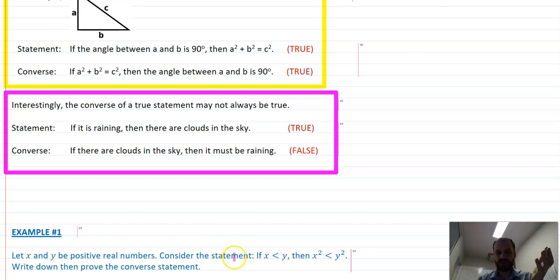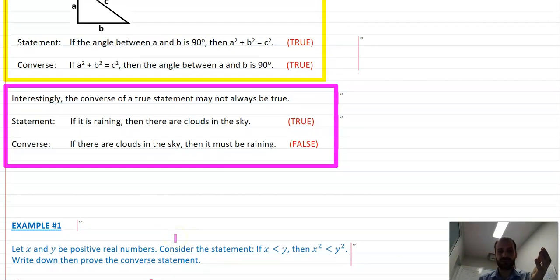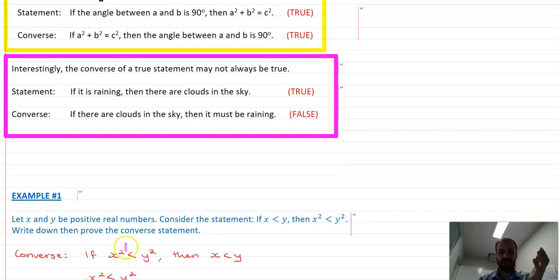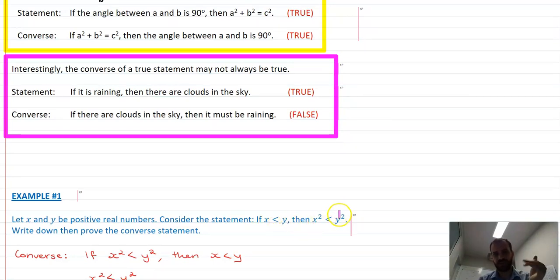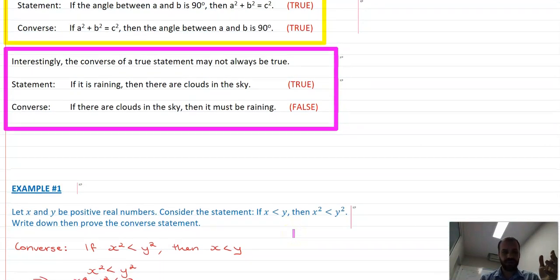So pretty easy to write down the converse statement. If X squared is less than Y squared, then X is less than Y. Now, you've seen this proof before, but you didn't prove the converse. You proved if X is less than Y, then X squared is less than Y squared. Proving the converse, I think, is a little bit easier than proving the original statement. All right, let's prove it.